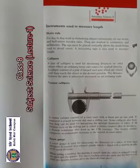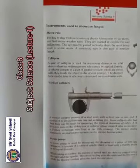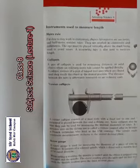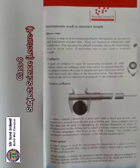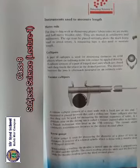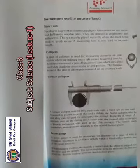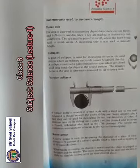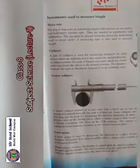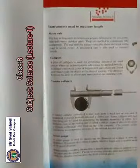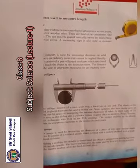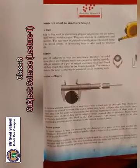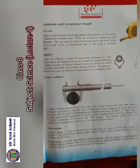When we can't apply the ordinary meter rule directly, we use calipers. Calipers consist of a pair of hardened steel jaws. The object is placed in the desired position between the jaws, and the distance between the jaws is then measured on an ordinary scale. A more precise instrument is the vernier caliper, which consists of a steel scale with fixed jaws at one end and a sliding jaw. Some calipers also have inside jaws for measuring internal dimensions.